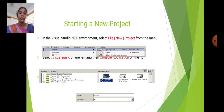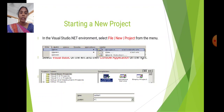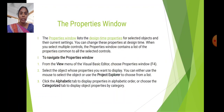Next, starting a new project. In Visual Studio, select File, New Project from the menu. Select Visual Basic on the left and then Console Application on the right. Select the Properties window. The Properties window lists the design time properties for the selected object and their current settings.